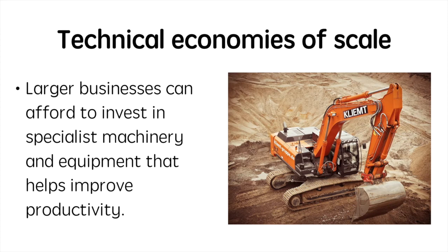Similar to the previous example, a large firm benefits from being able to purchase expensive specialist machinery that will generate greater benefits than costs. If I am a tailor who works for himself, it wouldn't be rational to purchase the same machinery that large clothing manufacturers use because it would be very expensive and I couldn't spread the cost across my output. The larger a firm grows, the more sense it makes for them to invest in specialist equipment and achieve technical economies of scale.